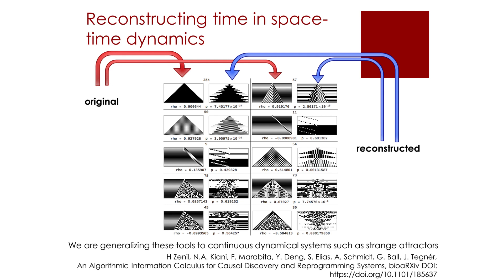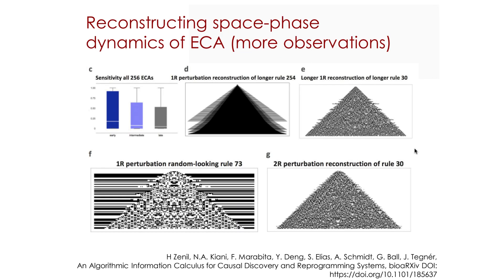When putting together and considering more data, the reconstructions are even better. In figure C, for example, and as would be theoretically predicted, the later in time a perturbation is performed, the less disruptive. Each pair shows the statistical row and p-values between the reconstructed and original space-time evolutions, with some models separating the system into different apparent causal elements.